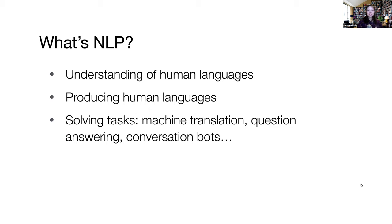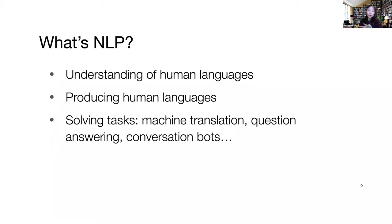In language, almost the first problem you start thinking about is producing that language. If you're studying language with a machine, you naturally think about training a machine to produce such language. Of course in image tasks you have GANs and generative modeling, but in my experience generative modeling comes later in the studying path — it's generally harder in computer vision to think about generation. But in language it comes more naturally to people's minds.